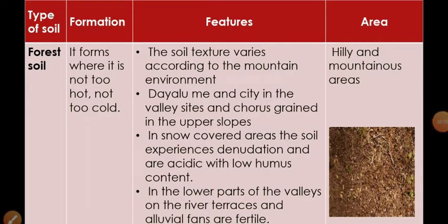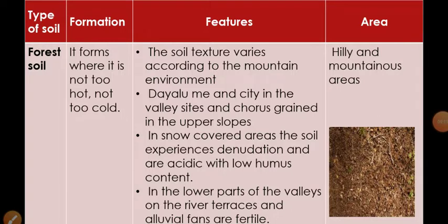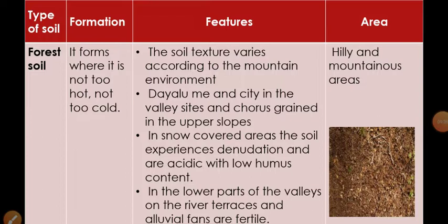Next is forest and mountain soil. As the name suggests, it is found in hilly areas and rainforest areas. The soil texture varies according to the mountain environment. In the lower parts of valleys, on river terraces and alluvial fans, soils are fertile. This soil is found in hilly and mountainous areas like the Himalayas, Shivaliks, and the Middle Himalayas. In snow-covered areas, the soil experiences denudation and is acidic with low humus content.